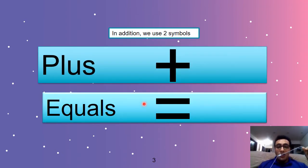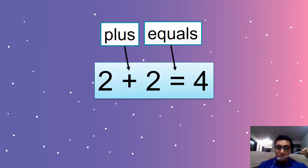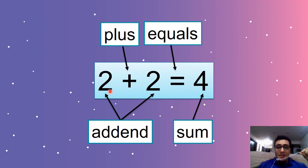So we know that addition has plus and equals. And look at here, we can read this now. 2 plus 2 equals 4. Super easy. We call these numbers addend. And we call the last, the answer, we call it sum. So we have two addends and one sum. We can have more than two addends too. We'll get to that later.